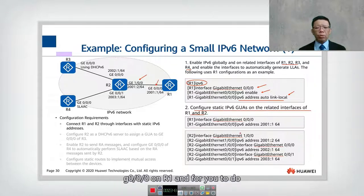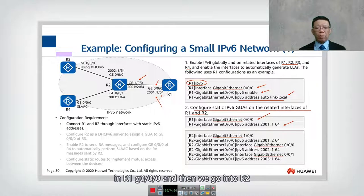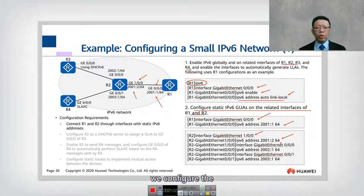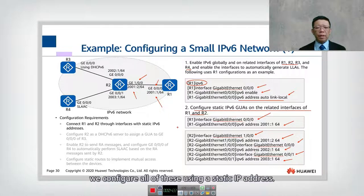Next, configure the static IPv6 global unique address on the related interfaces on R1 and R2, which are GigabitEthernet 0/0/0. We go into the interface view and configure the manual IPv6 address corresponding to 2001::1/64 on R1, then go into R2 and configure the corresponding addresses on all interfaces using static IP addresses.